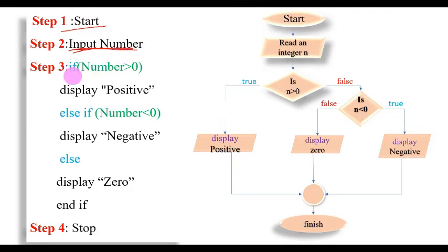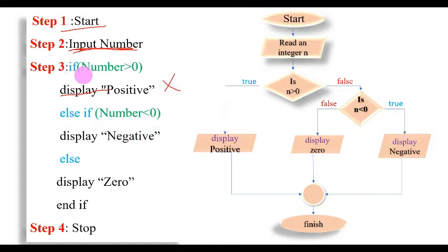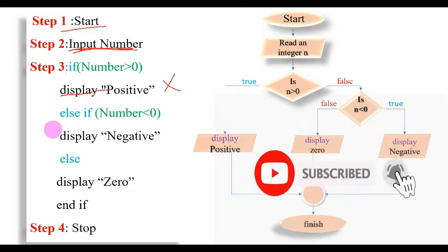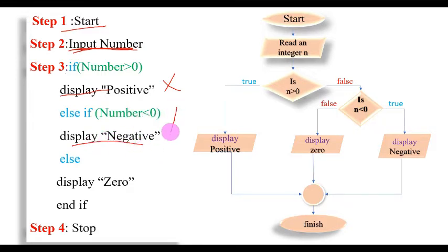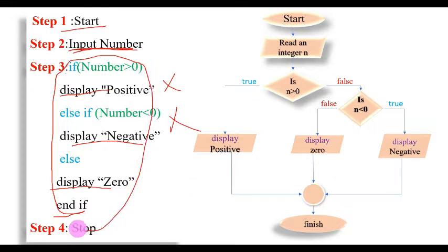Then we check: if the number is greater than zero, that condition is true, so we display that the number is positive. If the number is not greater than zero, we check the next condition: if the number is less than zero, that means the number is negative, so we display negative. If that condition is also false, the input must be zero, so we display zero. Finally, we end the if statement and terminate the program.